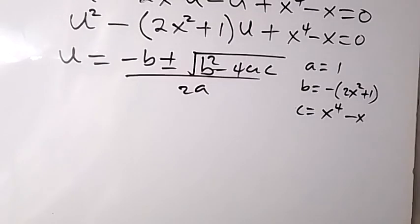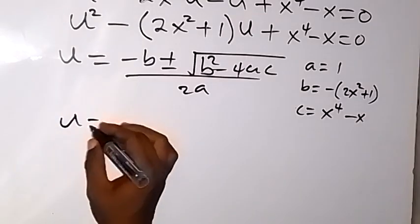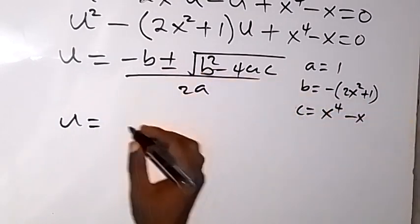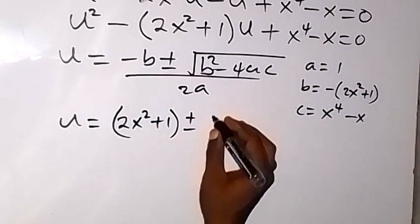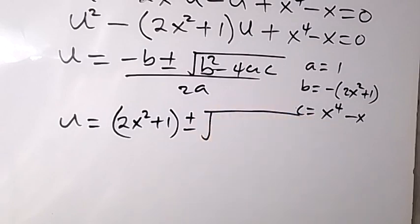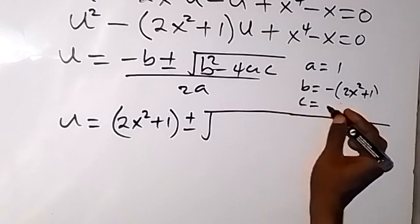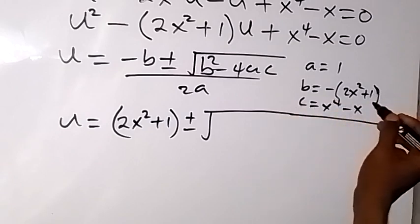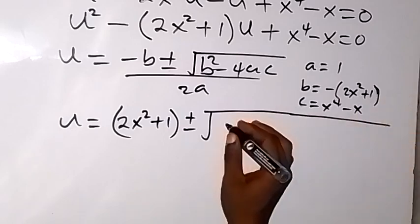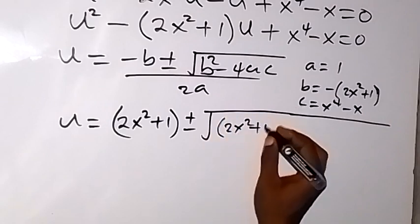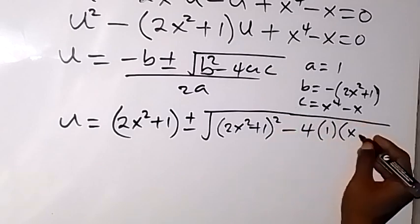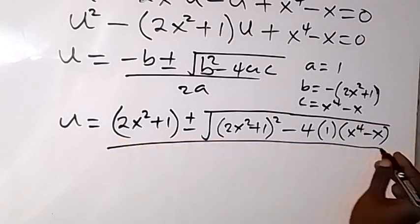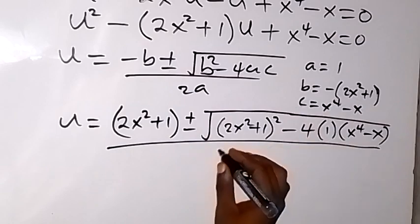Substituting: u equals 2x squared plus 1, plus or minus square root of (2x squared plus 1) squared minus 4 times 1 times (x to the power 4 minus x), all over 2 times 1, which is 2.